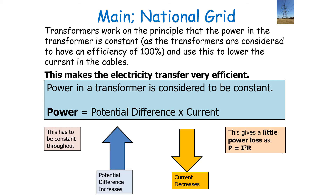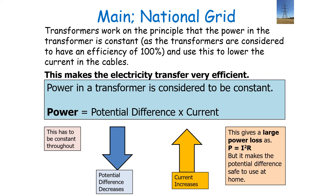Because the power in the transformer must remain constant, if we increase our potential difference we decrease our current, and this gives us a little power loss in our transmission cable because the I in the equation P = I²R is now lower. We can also go the other way: increasing our current decreases our potential difference, which gives a large power loss in the transmission cable — but we do this to make the potential difference value safe to use at home.